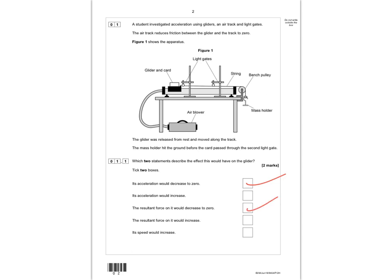To explain that: first, the resultant force goes to zero because the mass is no longer pulling the glider along, and if the force is zero, then the acceleration also has to be zero.